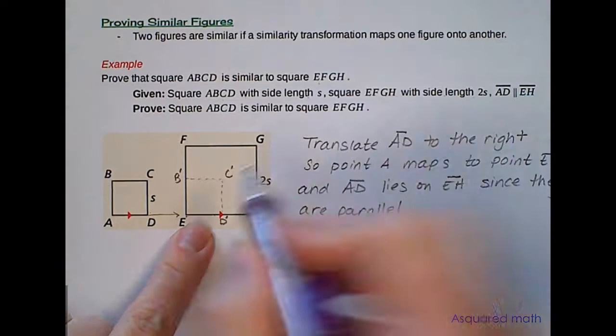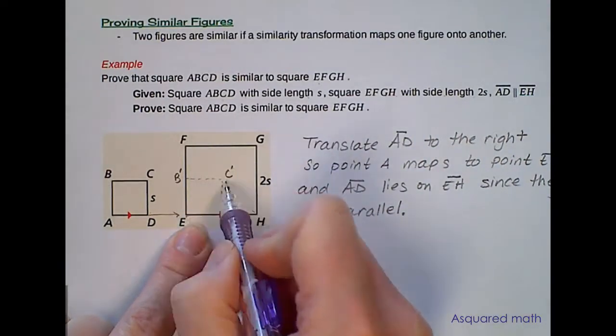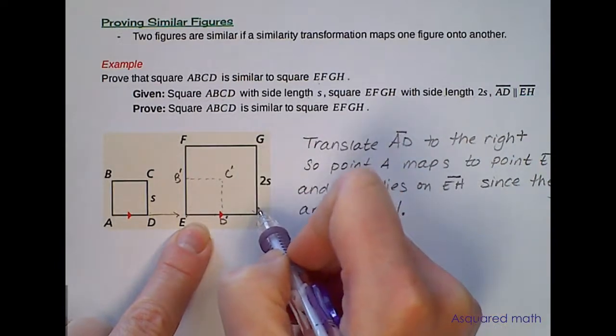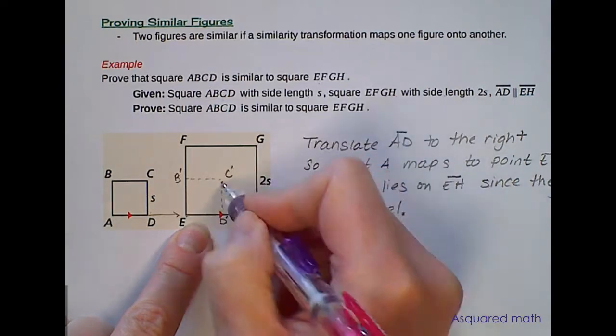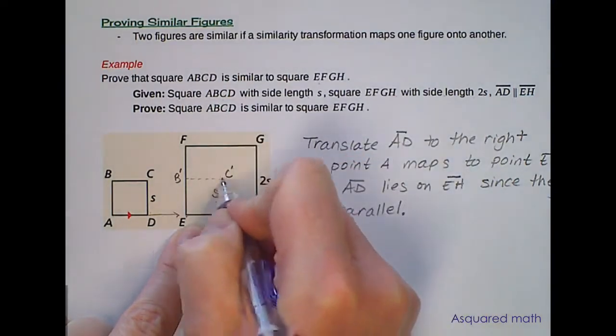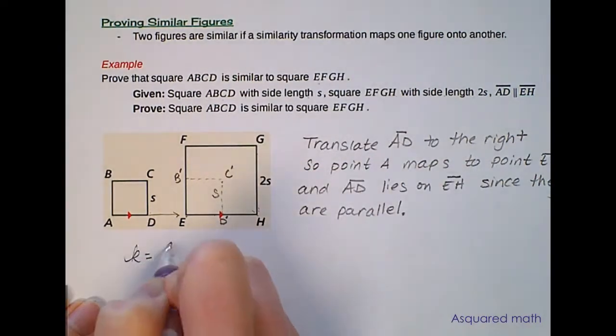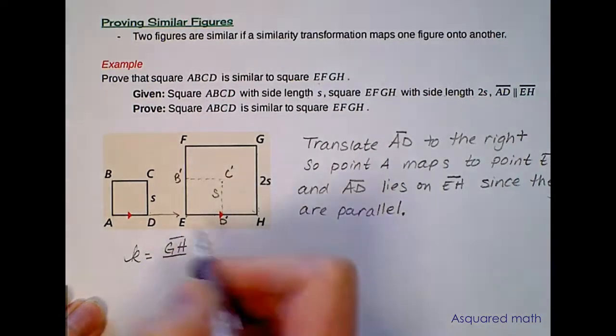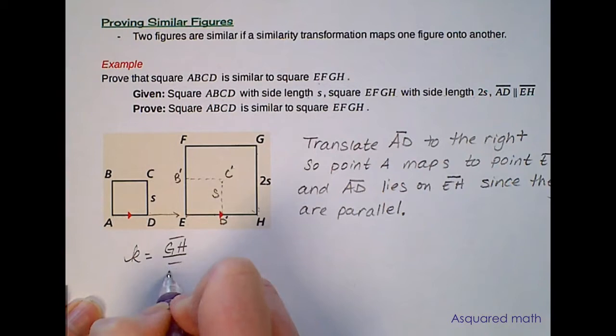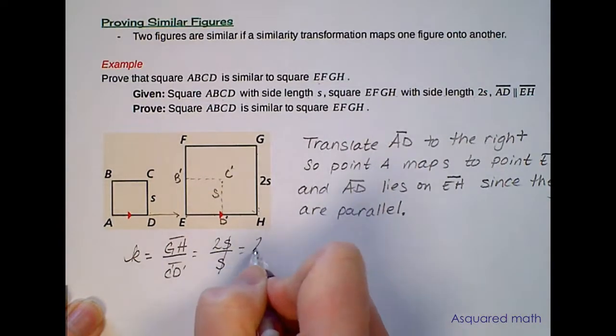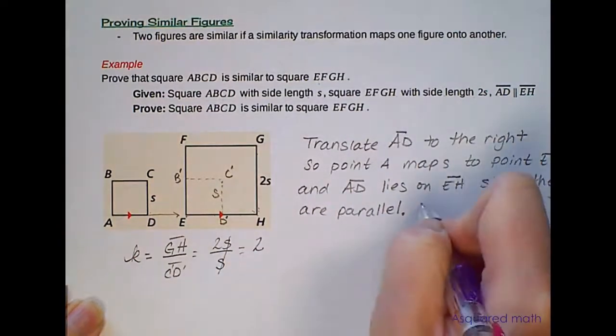So then we can see here, if we take a look, we want to figure out the scale factor. We want to take the side length of our image, the ratio of the side length of our image to that of our pre-image. And this is side length S, this is side length 2S. So the scale factor, if we look at the ratio of line segment GH to line segment C prime D prime, or even CD, you could write either one. We will have 2S divided by S, the S's will cancel and we're left with a scale factor of 2.